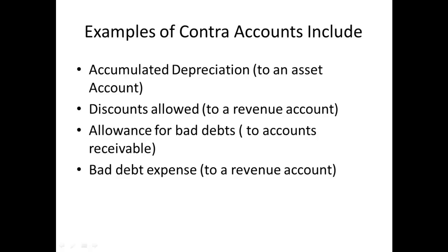Allowance for bad debts is a Contra account to accounts receivable. Accounts receivable is the money that people owe to us because of credit sales we've made, but we may need to make an allowance for the fact that not all of those people may pay — that's the allowance for bad debts. It is a credit account to the debit account of accounts receivable, which is an asset. Bad debt expense, which is partnered with allowance for bad debts, has a debit normal balance because it's a Contra account to a revenue account.